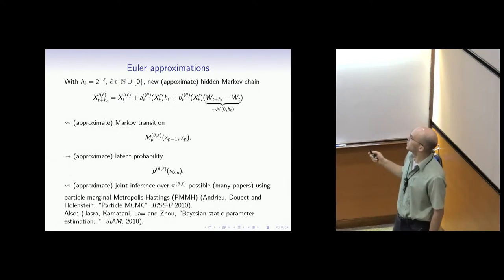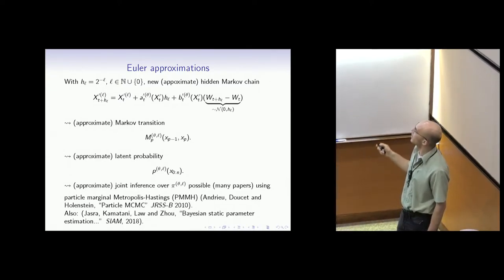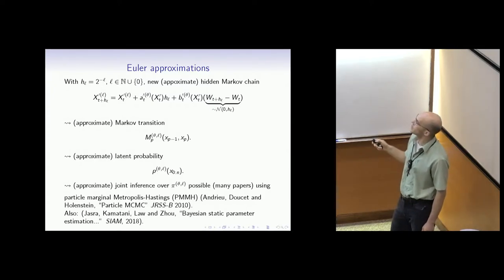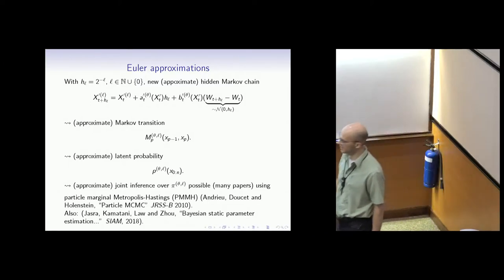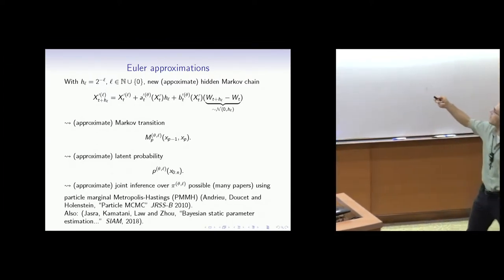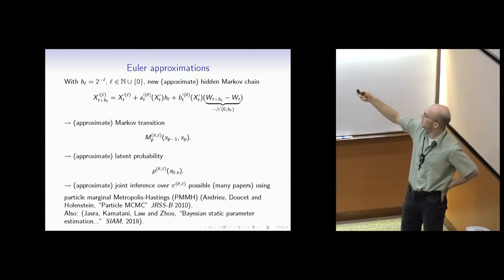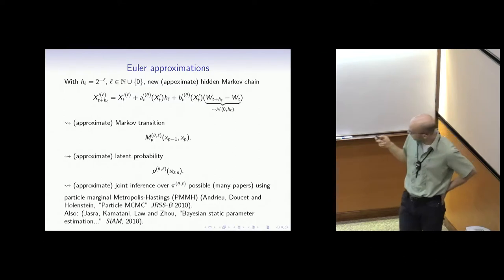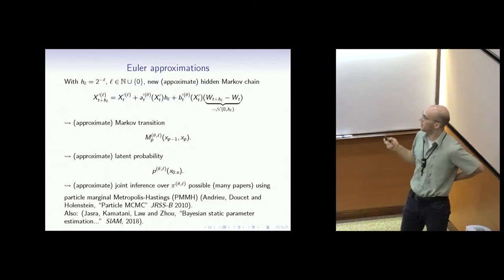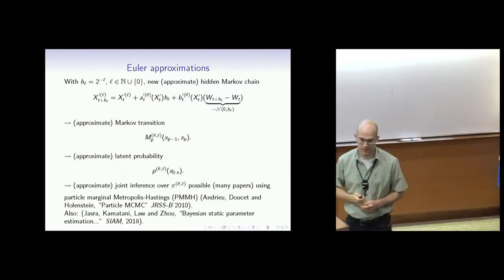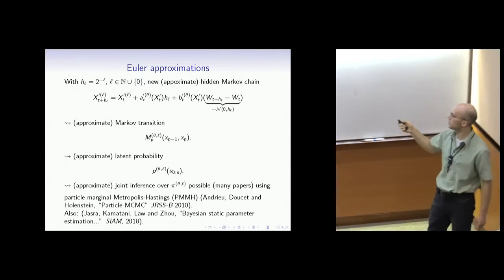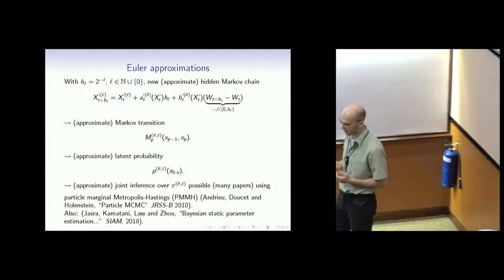Everyone here I'm sure is familiar with Euler approximation. This defines a new hidden Markov chain with discretization size given here. We obtain this Markov chain with associated Markov transition kernel associated to the level L. This induces a latent probability on latent states. As well known and quite popular, one can then use the PMMH to do joint approximate inference.